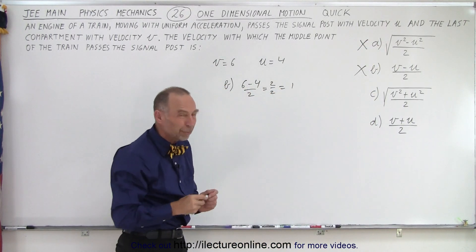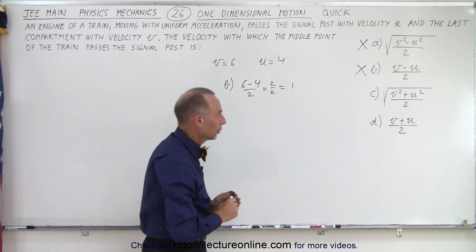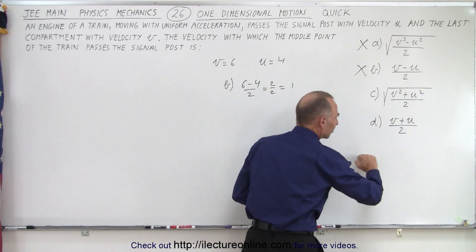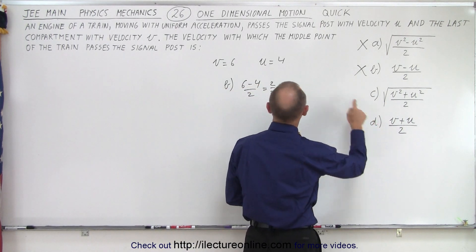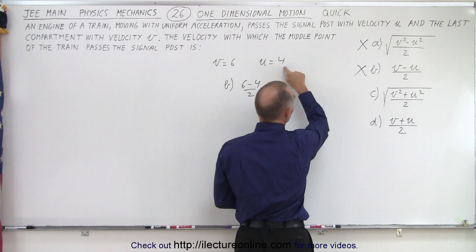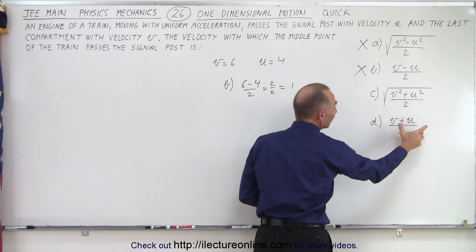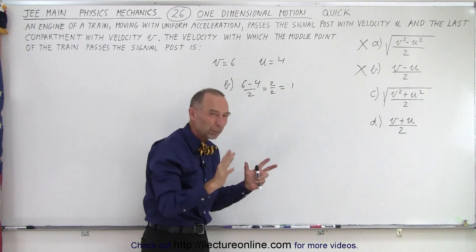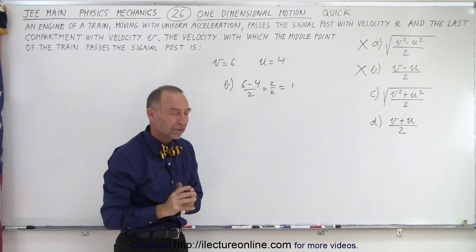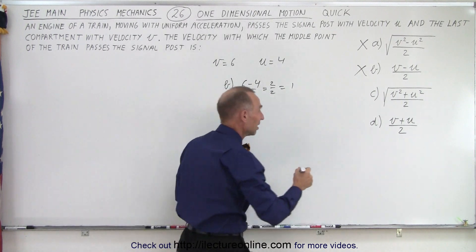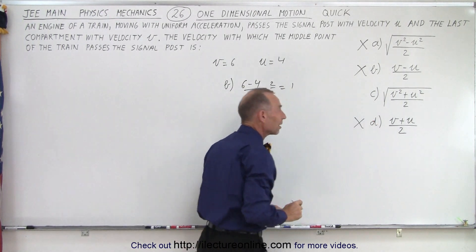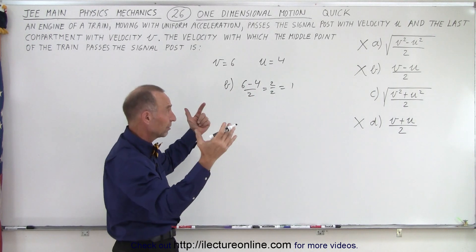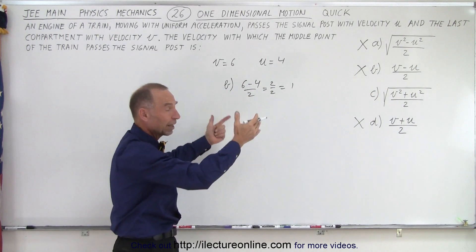Thirdly, we don't expect a linear answer because the train is accelerating. Notice if we take six plus four divided by two, we get five, which is exactly in the middle — and that is not what we would expect. So again, that seems to be a non-plausible answer. We don't expect a linear answer, which only leaves us one possible answer.